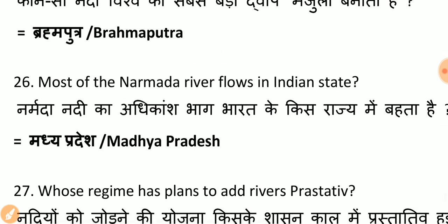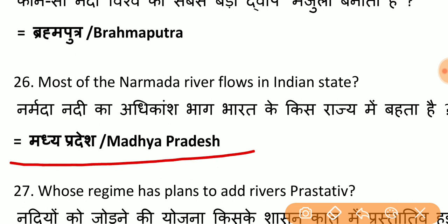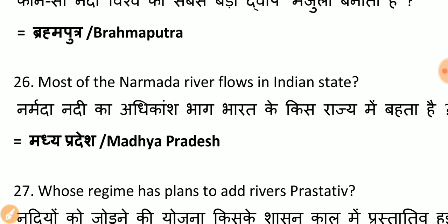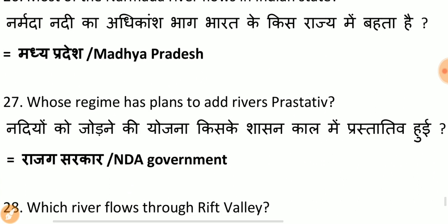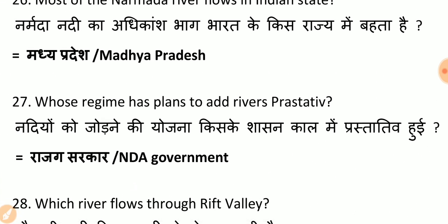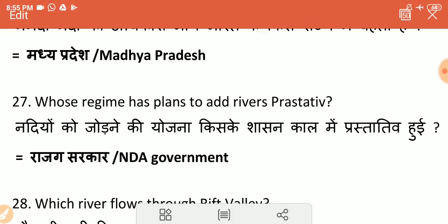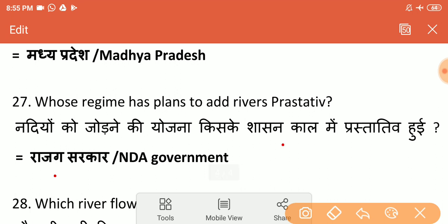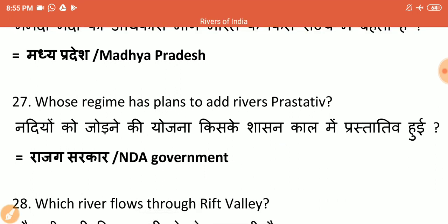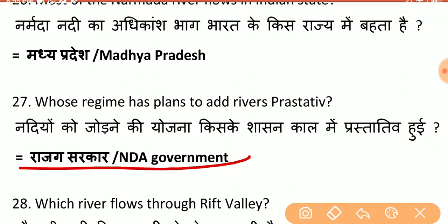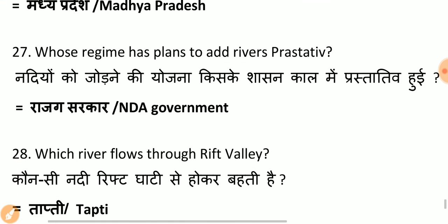Most of the Narmada river flows through which Indian state? It flows through Madhya Pradesh — most of the Narmada passes through Madhya Pradesh. Whose tenure saw the plan to interlink rivers proposed? The river interlinking plan was proposed during the NDA/BJP government's tenure.